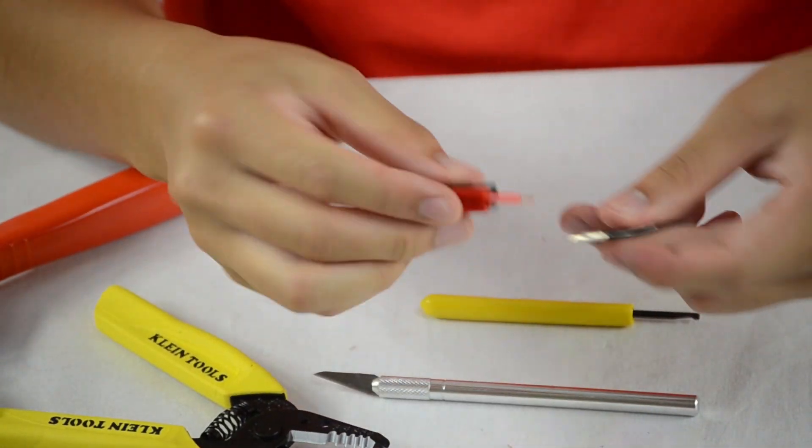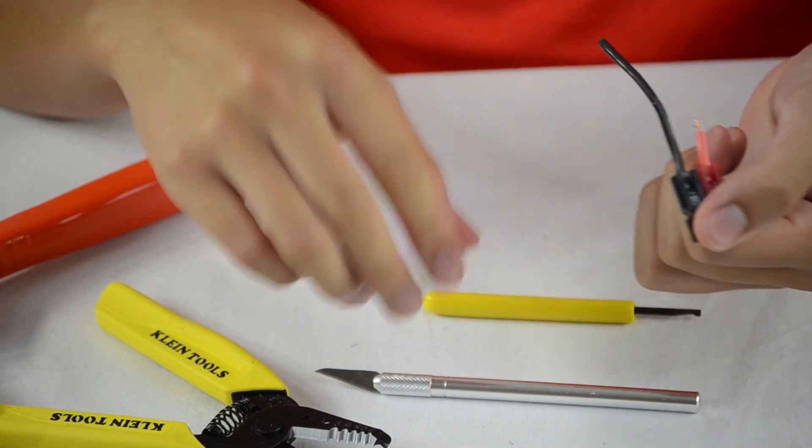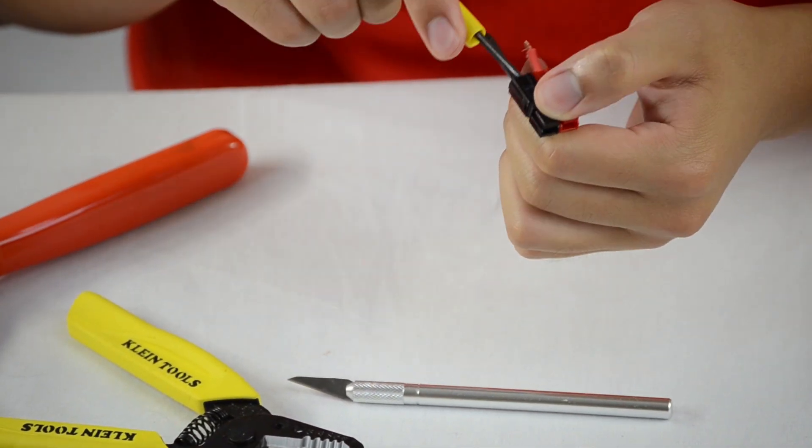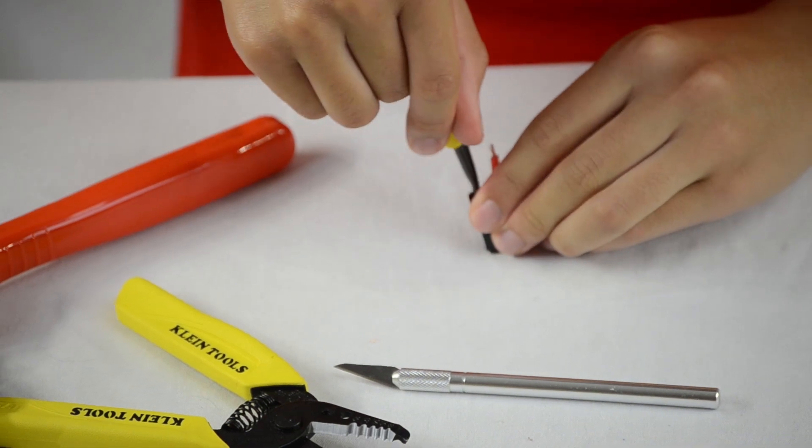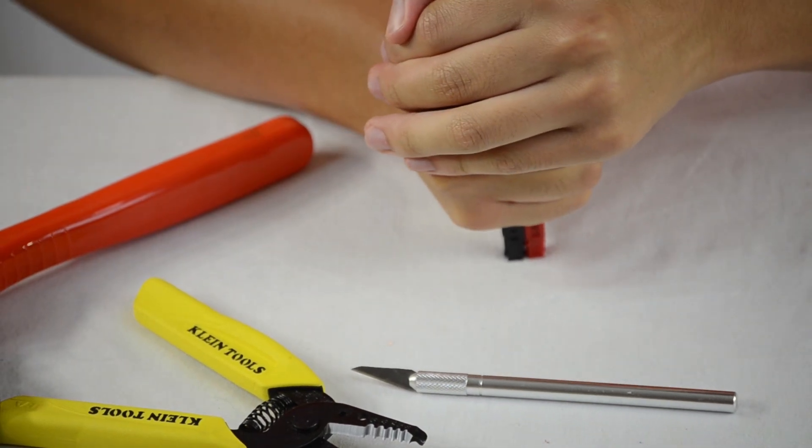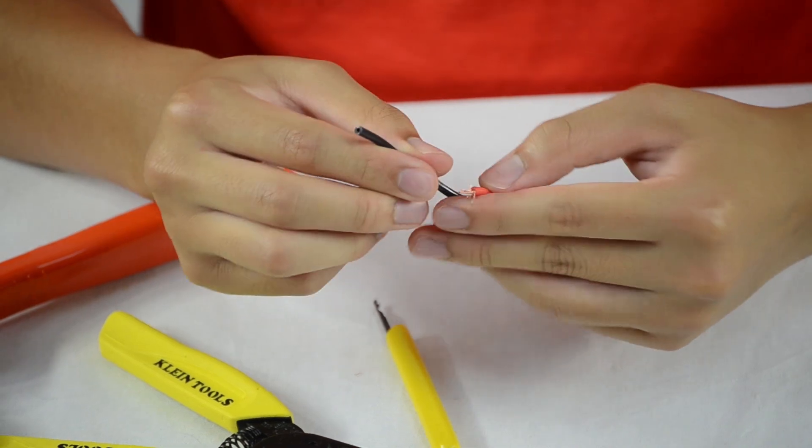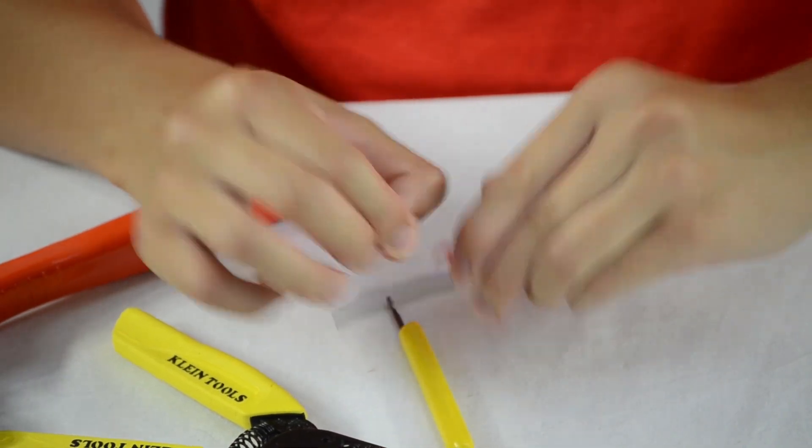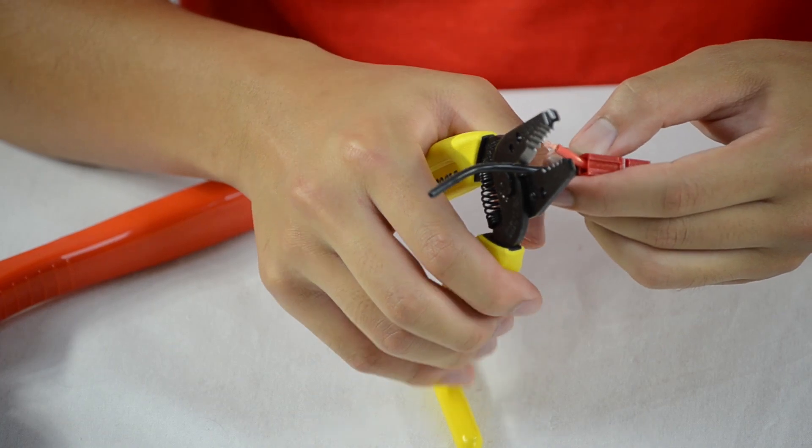And now insert this part into the plug. This part can actually be a little bit tricky. It can take a long time to actually do sometimes. But once you get the hang of it, it can go quite quickly. Alright, so once you hear that click, you know that this is secure. And now all you want to do is just cut off this end as well and just strip the tip.